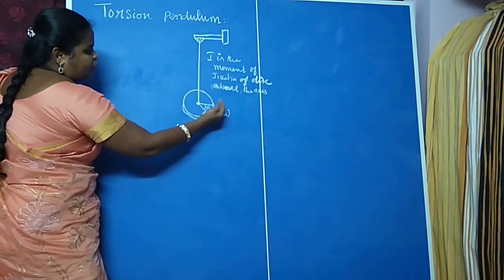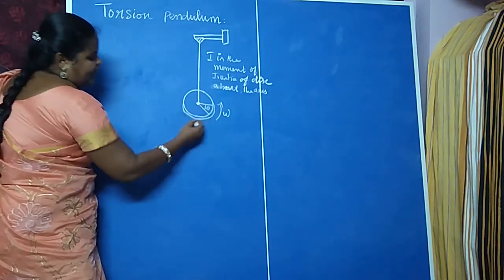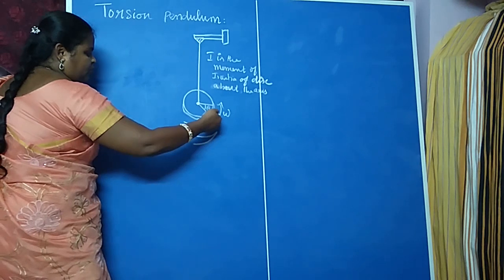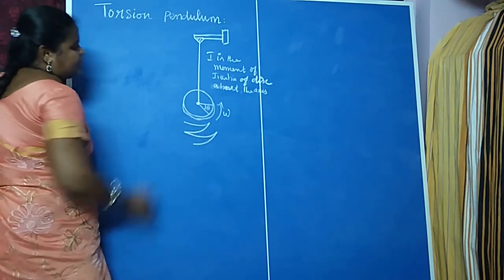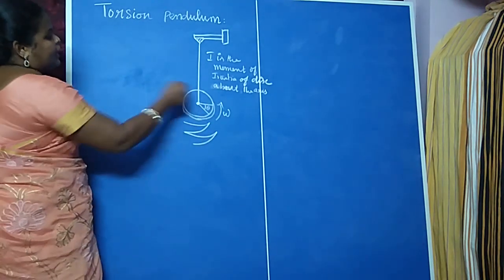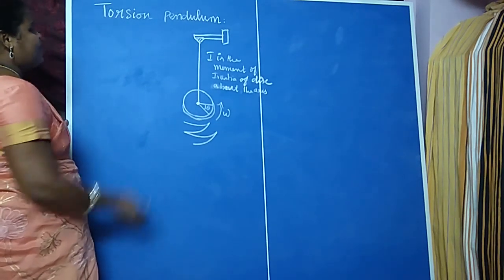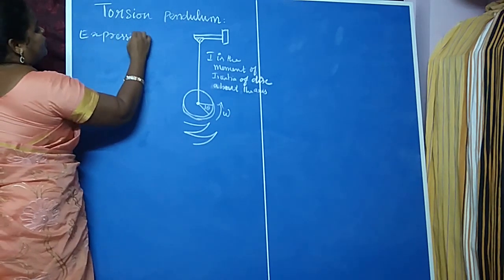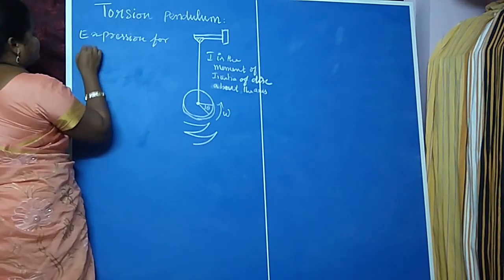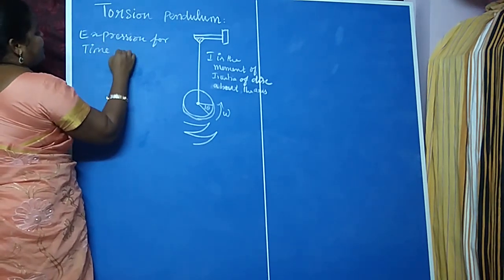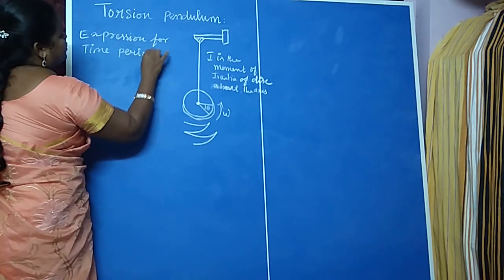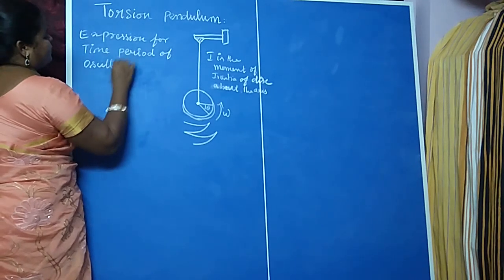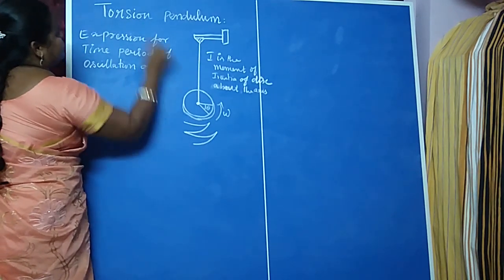The wire is twisted through an angle theta and then released. So the disc executes torsional oscillation — the disc will oscillate, going and coming back. This is the torsional oscillation. From this oscillation, we can find out the time period of the oscillation, that is the expression for time period of oscillation of a torsional pendulum.